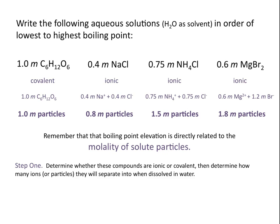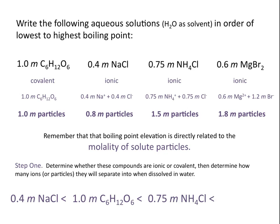The higher the concentration of solute particles in the solution, the higher the boiling point. So the solution with the lowest boiling point will be the sodium chloride solution, followed by the glucose solution, followed by the ammonium chloride solution, with the magnesium bromide solution having the highest boiling point.